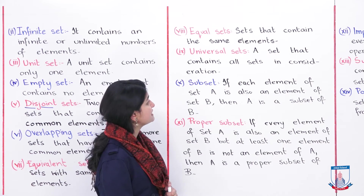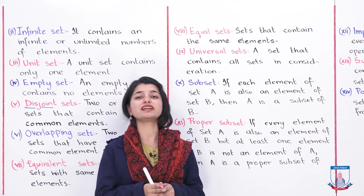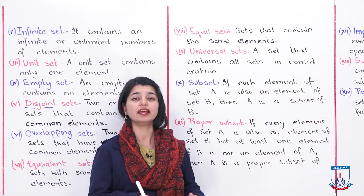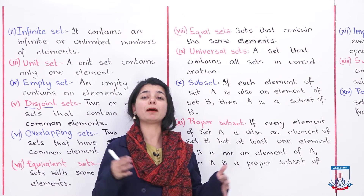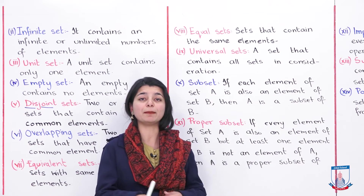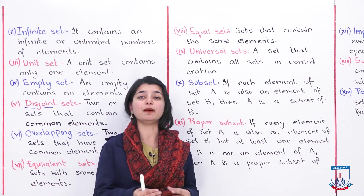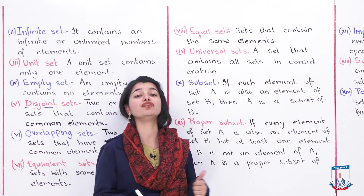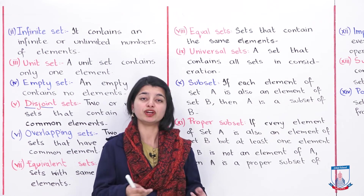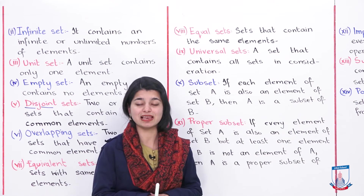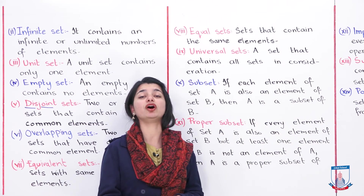The next definition is universal set — a set that contains all sets in consideration. For example, if one set has elements 2, 4, 6 and another has 3, 6, 9, you can write these two sets together in a universal set. The universal set contains all elements that exist in the other sets. Such a set is called a universal set.